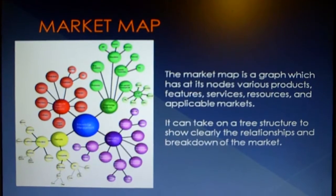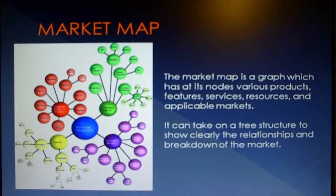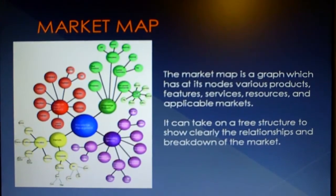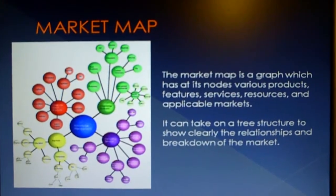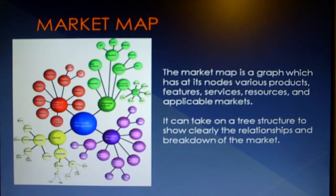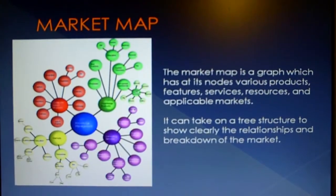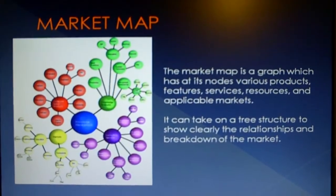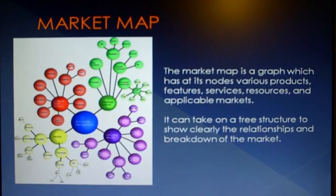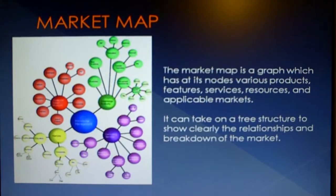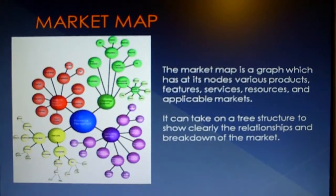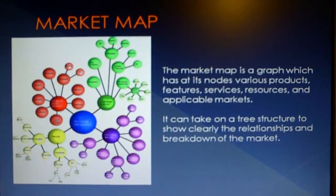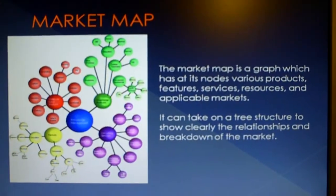Next, we have the market map. The market map is a graph which has at its nodes various products, features, services, resources, and applicable markets. It can take on a tree structure to show clearly the relationships and breakdown.